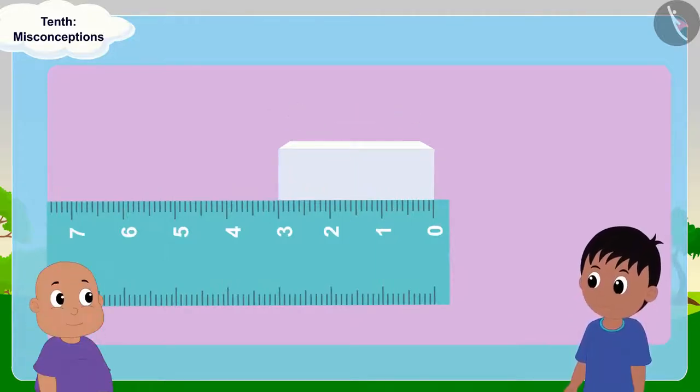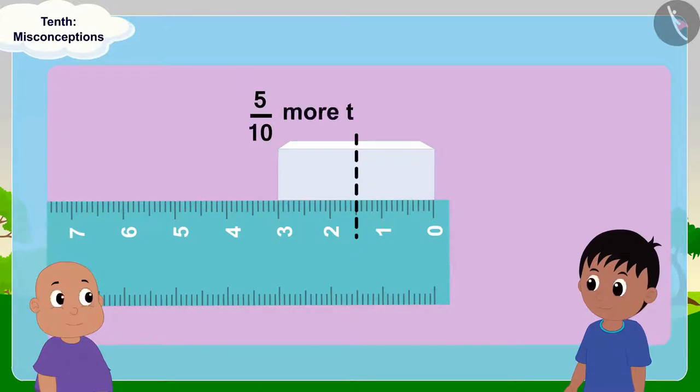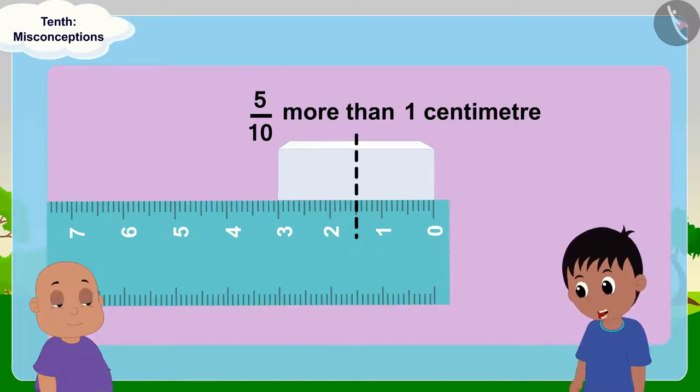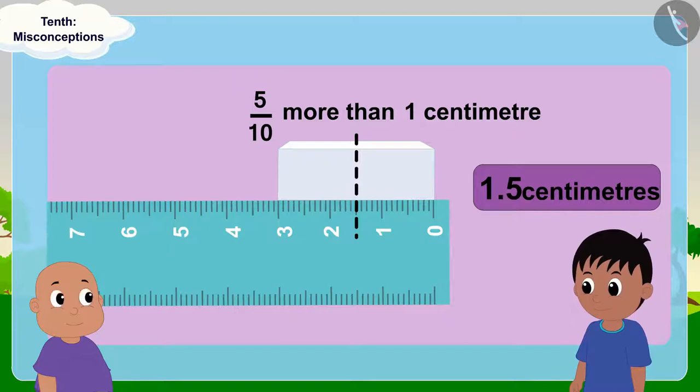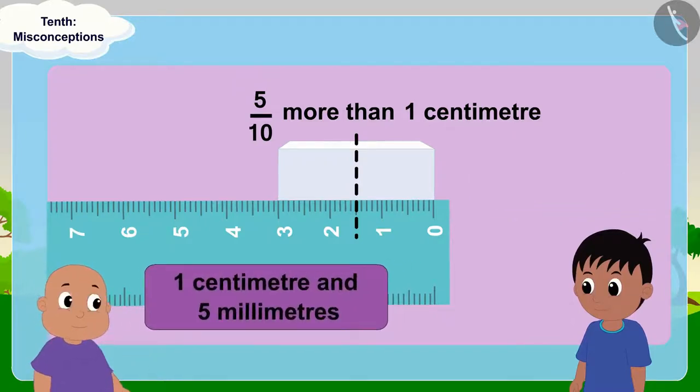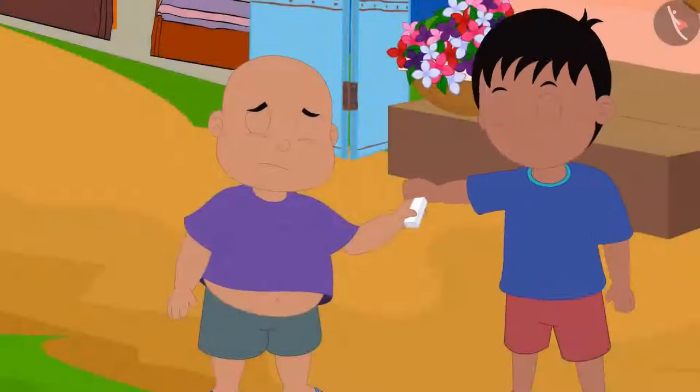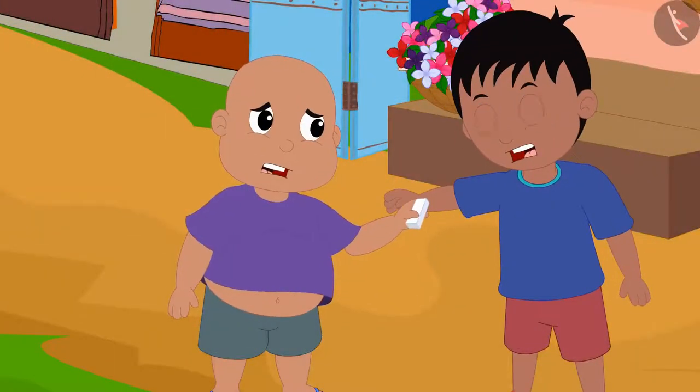Now, Raju and Bablu saw that half of the eraser is 5 tenths more than a centimeter. Raju immediately said, Bablu, half of the eraser is 1.5 cm long. No, half of the eraser is 1 cm and 5 mm long, Bablu told Raju. Both Raju and Bablu started quarrelling.